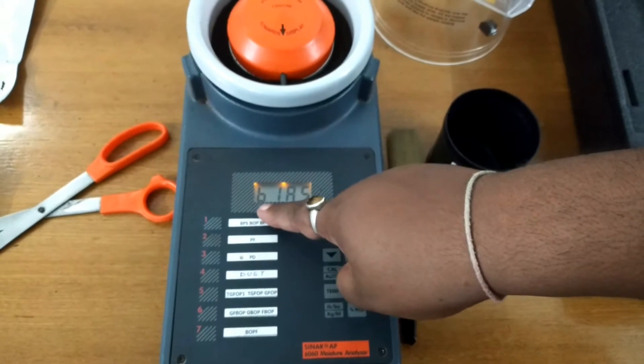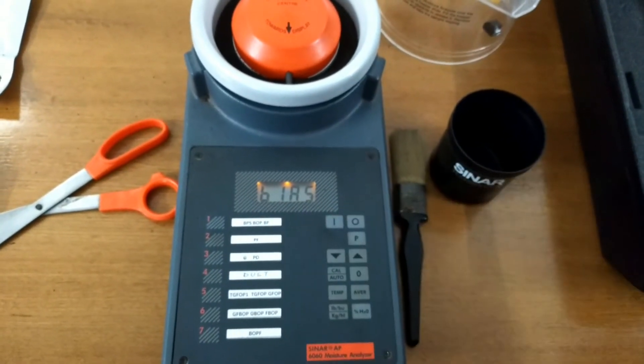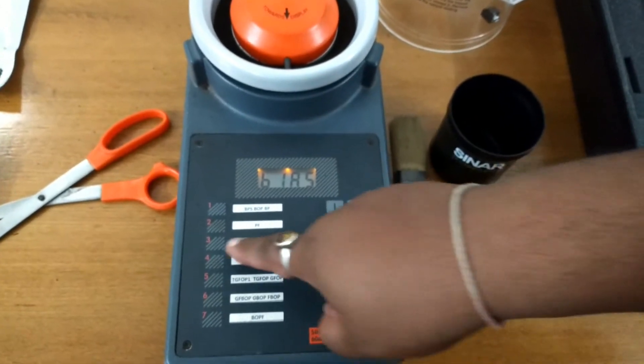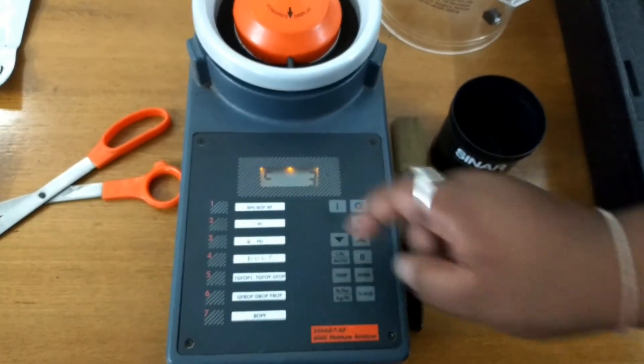The display shows BIAS. Now, with this display, press channel number 3 and press H2O.